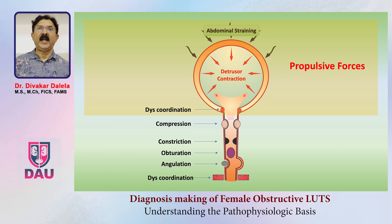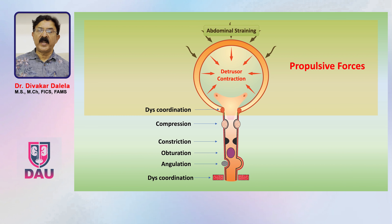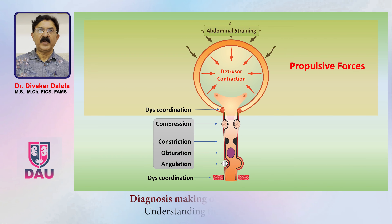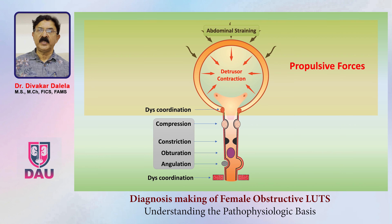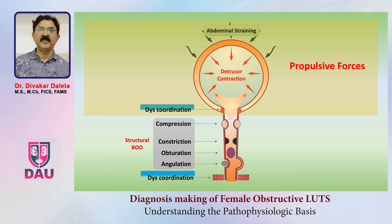At the ends of the urethra there are sphincters — towards the bladder, the bladder neck internal sphincter, and towards the outlet, the external sphincter. Both these sphincters can have discoordination, meaning they do not open properly at the time of voiding, thus creating obstruction to bladder outflow. The first four mechanisms — compression, constriction, angulation, and obturation — create mechanical obstruction, called structural bladder outflow obstruction. Discoordination at the bladder neck or external sphincter is known as functional bladder outflow obstruction.